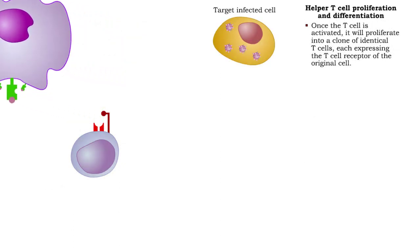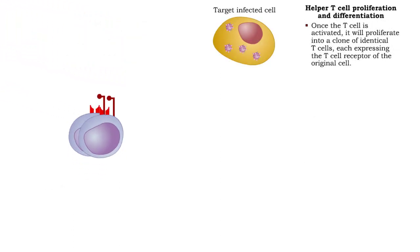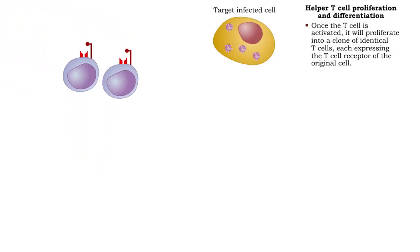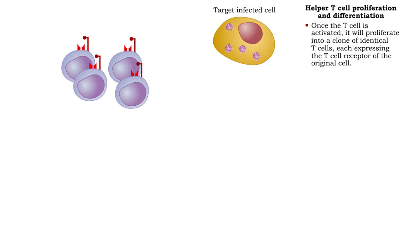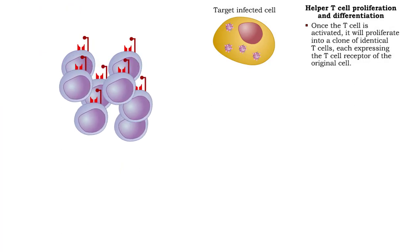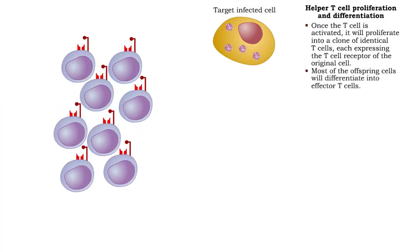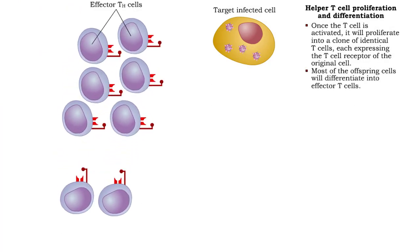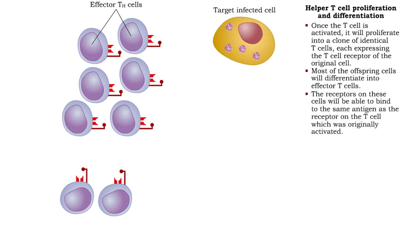Once the T cell is activated, it proliferates into clones of itself. Most of these new cells differentiate into effector T cells. The receptors on these cells are able to bind to the same antigen as the receptor on the original T cell.